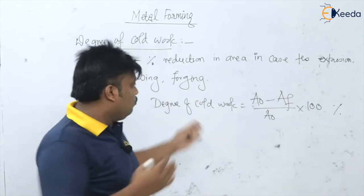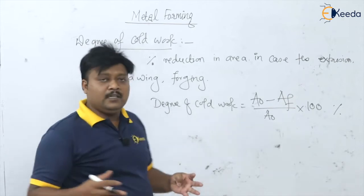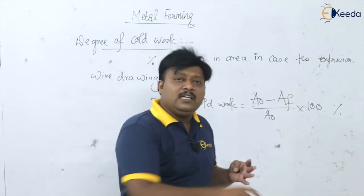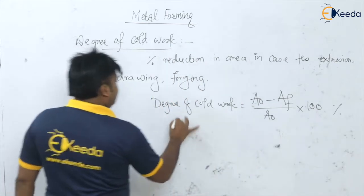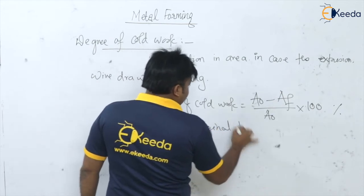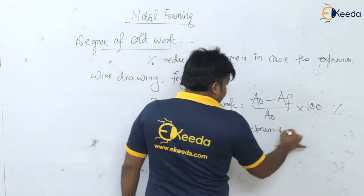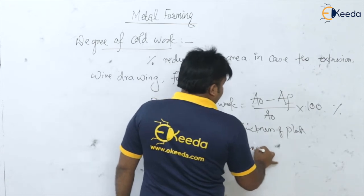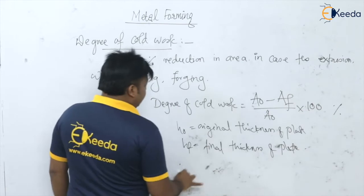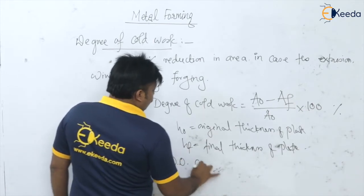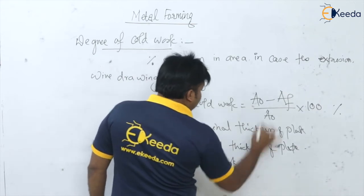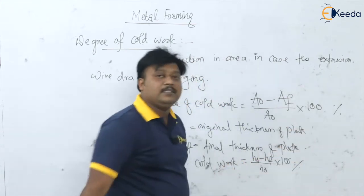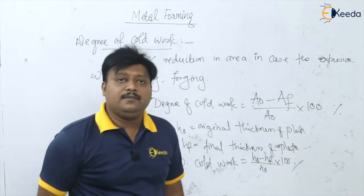If I talk about the rolling operation, in rolling the initial thickness of the plate or strip decreases through rotating rollers because of deformation. So if h₀ is the original thickness and h_f is the final thickness of the plate or strip, then the degree of cold work for rolling = (h₀ minus h_f) divided by h₀, multiplied by 100, in percentage.